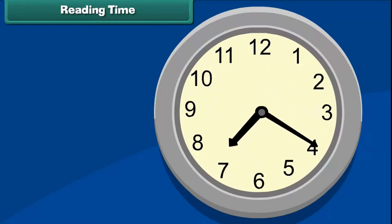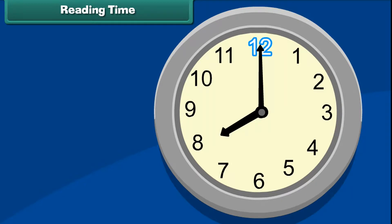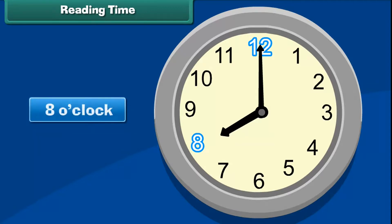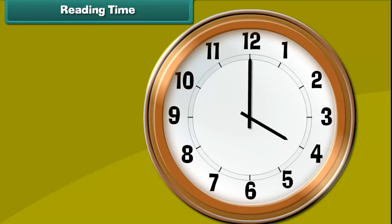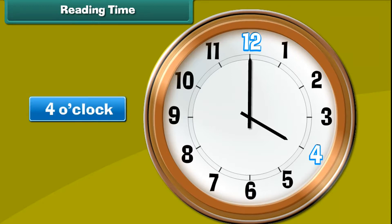Reading time. Note the positions of the minute and hour hands on the clock face. The minute hand is pointing to 12, and the hour hand is pointing to 8 — it means the time is 8 o'clock. Look at another clock: its minute hand is pointing to 12 and the hour hand is pointing to 4, so the time is 4 o'clock.